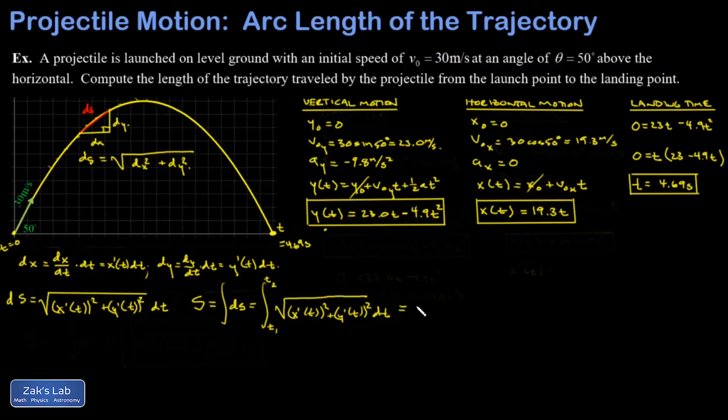So all we have to do to wrap up our problem here is differentiate my x and y coordinates. So I get x prime of t is equal to 19.3. y prime of t is 23 minus 9.8 t. Again, twice 4.9 is 9.8.